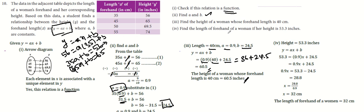Find the length of forehand of a woman if her height is 53.3 inches. y value is 53.3, so 53.3 equals 0.9x plus 24.5.